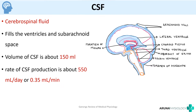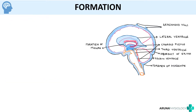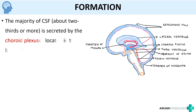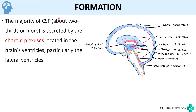CSF is formed mainly from the choroid plexus — these specialized cells produce two-thirds of the CSF. The majority of CSF is secreted by the choroid plexus located in the brain ventricles, particularly the lateral ventricles.